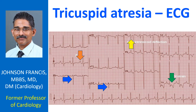In true left atrial overload, the atrial intrinsic cord deflection is more slanting, so that the negative component of the P wave is almost U-shaped, rather than the V-shape seen in this case.